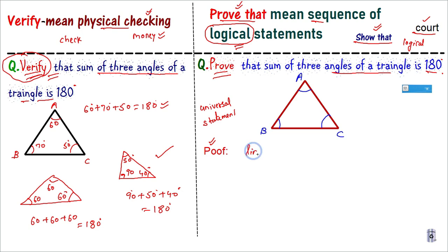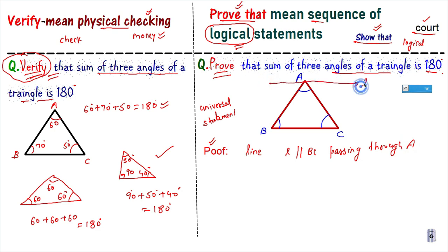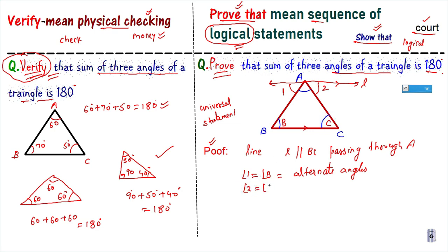To prove that the sum of angles is 180°, first I will do a construction: draw a line L parallel to BC, passing through vertex A. Since L is parallel to BC, angle 1 (at A) and angle B are alternate interior angles, so angle 1 = angle B. Similarly, angle 2 (at A) and angle C are alternate interior angles, so angle 2 = angle C.